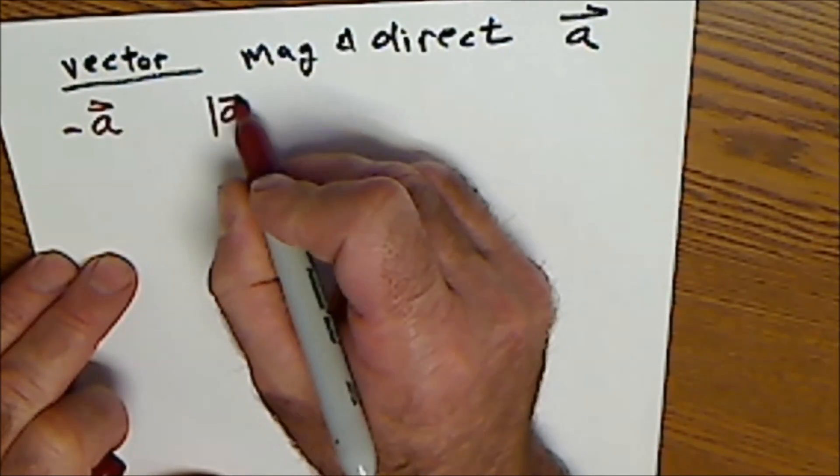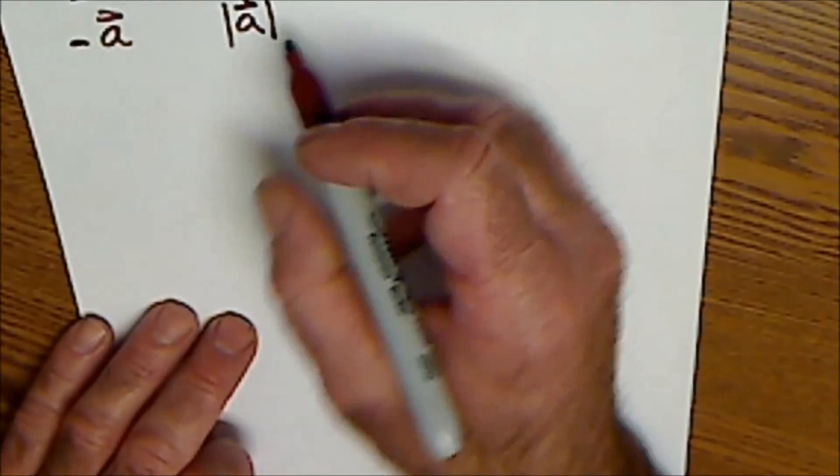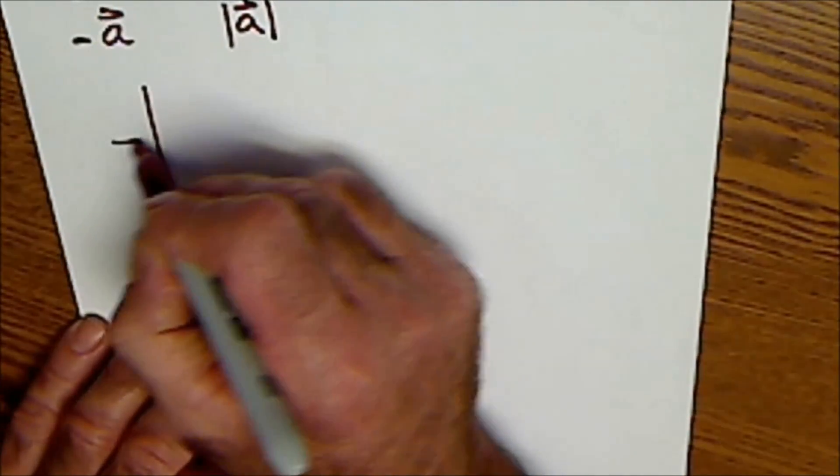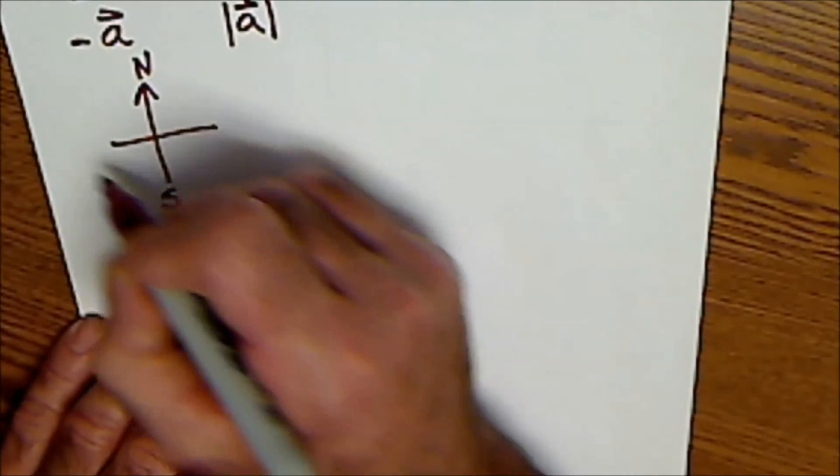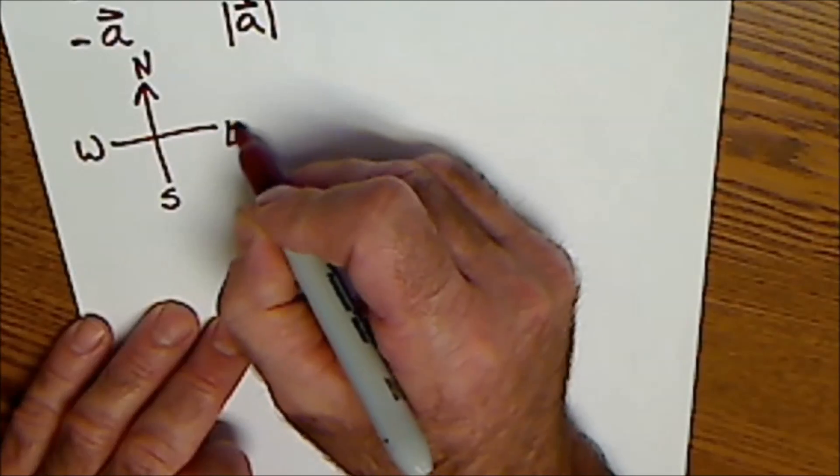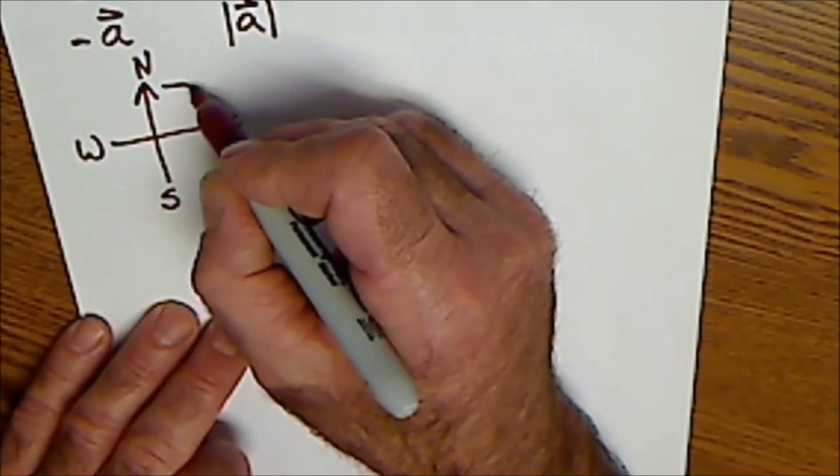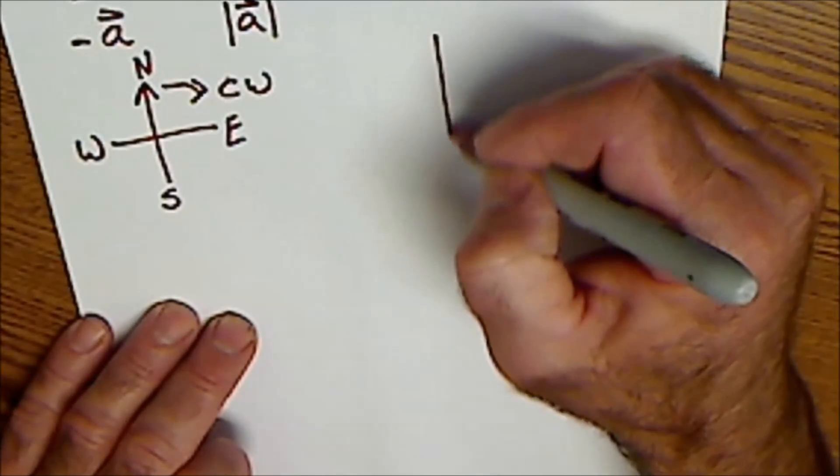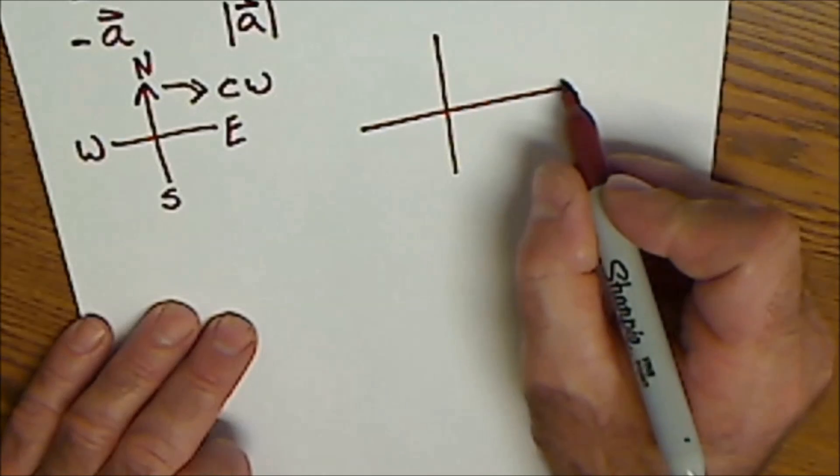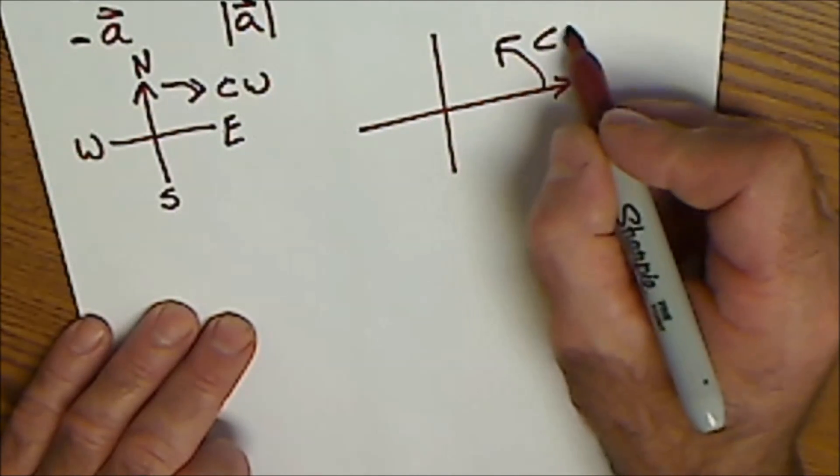The absolute value of vector A means the magnitude only. An important thing to note is if I'm talking about a navigation problem, this is north, south, west, east. This is zero degrees, 90, 180. I go clockwise off of north in navigation. If there's no notation at all on there, then it's counterclockwise off of x. So this is counterclockwise.